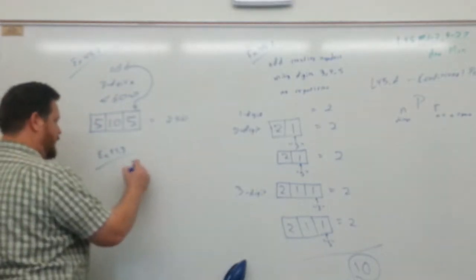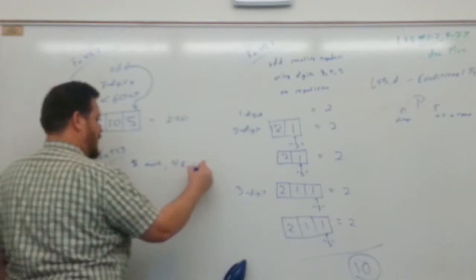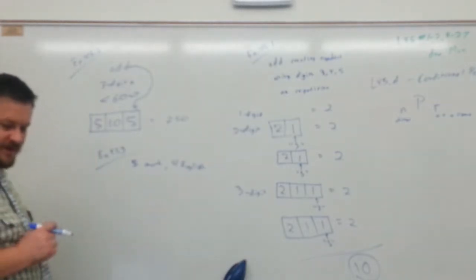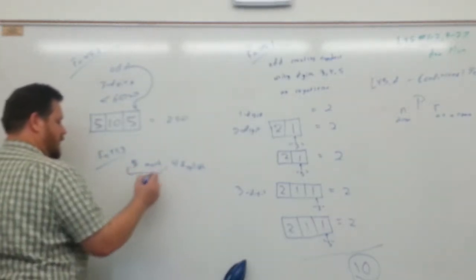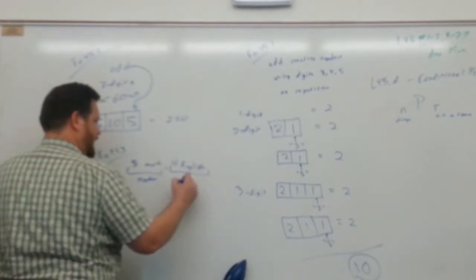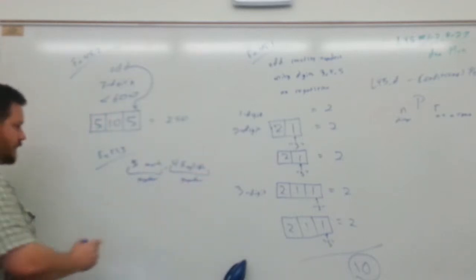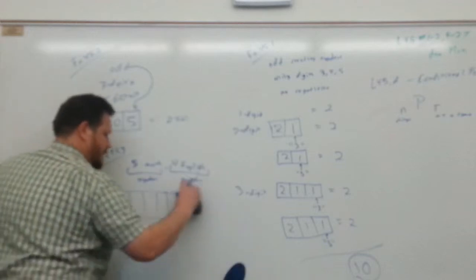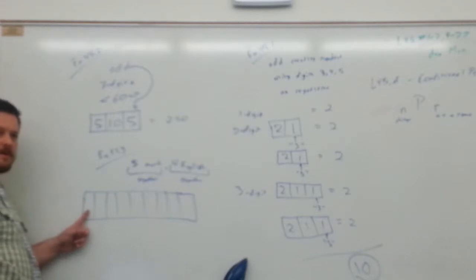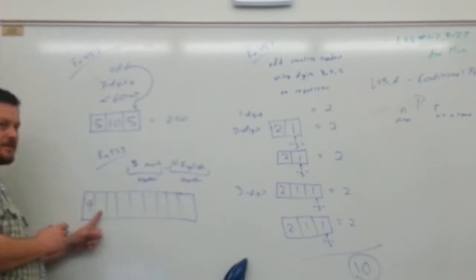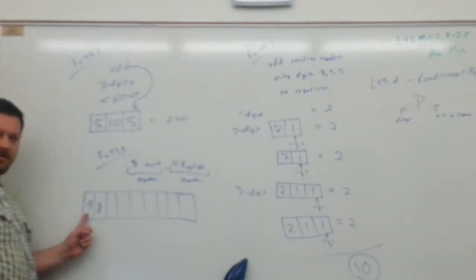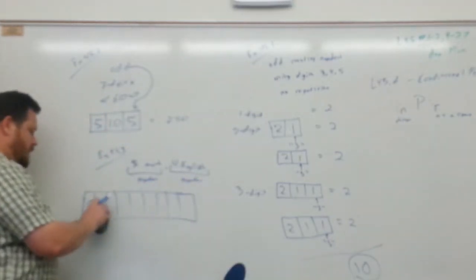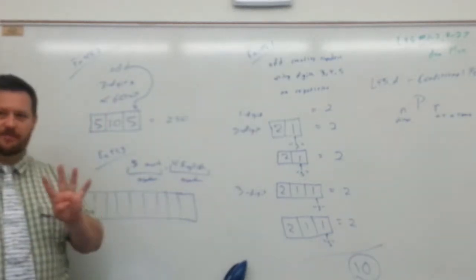Example 45.3: We have five math books and four English books. How many permutations are possible if the math books must be kept together and the English books must be kept together? We have a total of nine books. If I pick a math book here and an English book next to it, that's not allowed — I'm supposed to keep all the math books together and all the English books together.